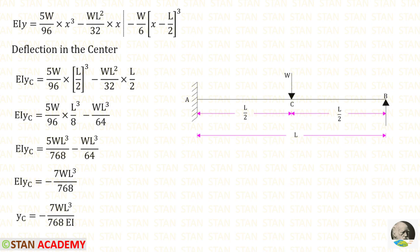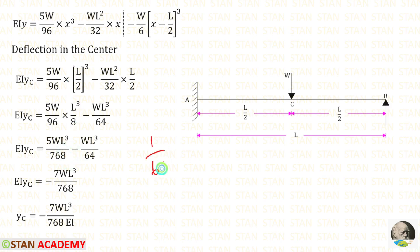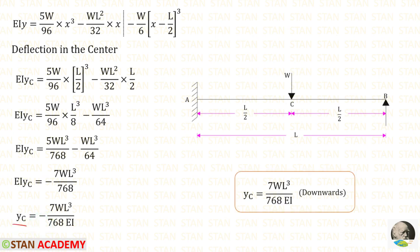Taking the deflection equation to find deflection at the center, X = L/2. The second term is not needed. (L/2)³ = L³/8; 5/96 × L³/8 gives 1/768 when multiplied. Subtracting 1/64 minus 5/768 using a calculator gives minus 7/768. Taking EI to the denominator, the deflection at center C equals minus 7WL³/768EI. The negative value confirms it is a downward deflection.